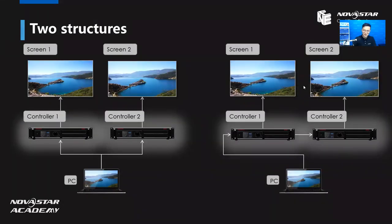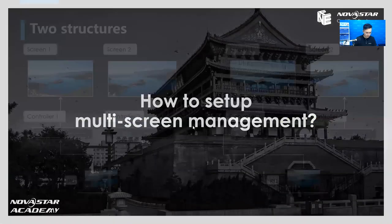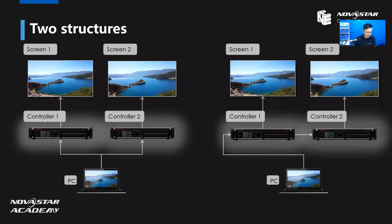I'll give you two simple structures as examples. The difference between these two structures is that both use two controllers, but the key difference is whether the two controllers are cascaded or non-cascaded. The first structure is non-cascaded units, and the second is cascaded. The cable used for cascading Novastar controllers is a USB cable. These two situations will have different software settings.